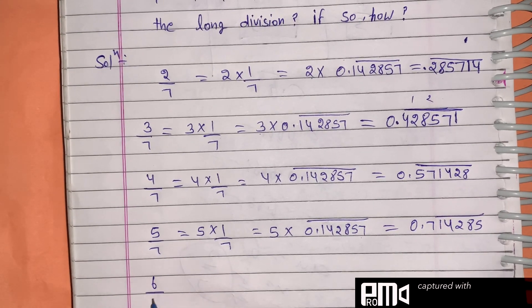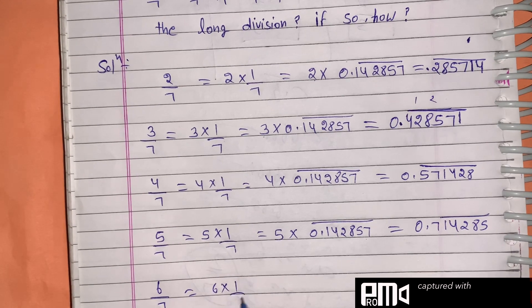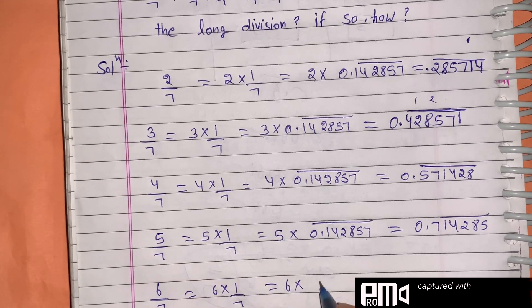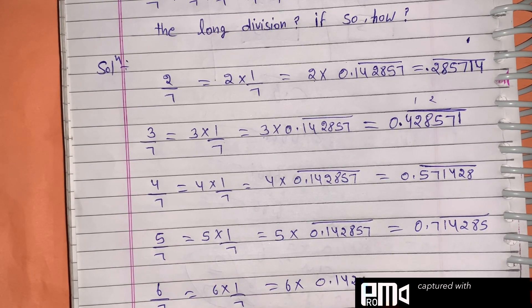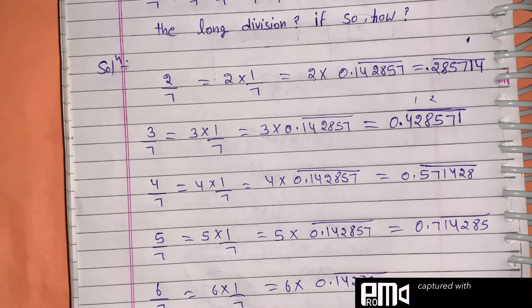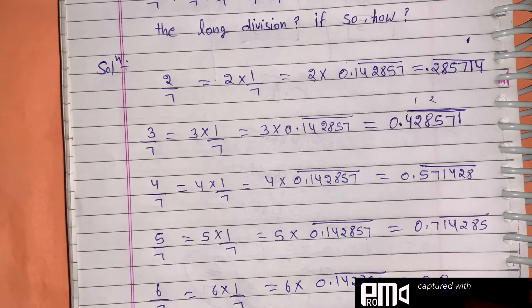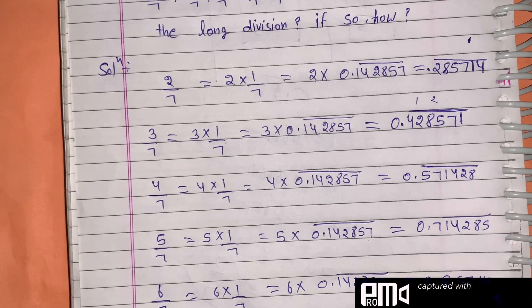We will take 6/7, which is 6 times 1/7. 6 times 0.142857 equals 0.857142 repeating.